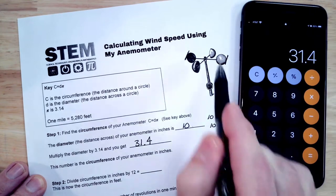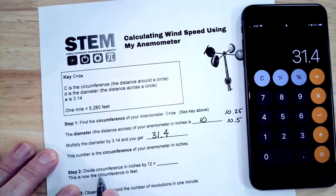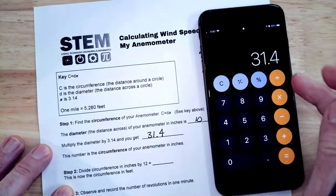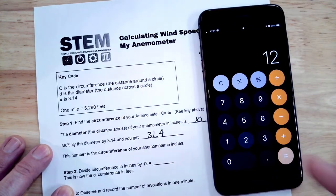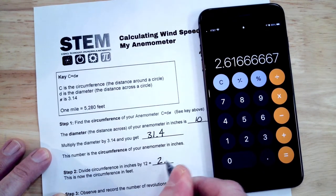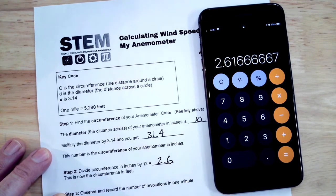Now we're going to divide that circumference by 12, so let's divide this by 12. We're going to get 2.6, and that's the circumference in feet all the way around your anemometer.